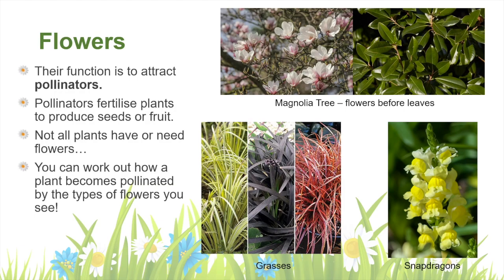Here we have two interesting examples. The magnolia tree produces its flowers before the leaves to make sure that the flowers are visible and can easily be accessed by pollinators. Once pollination is complete, that's when the leaves will grow. Another plant with flowers is the snapdragon — its flowers attract pollinators, but this plant is picky: it only wants certain creatures to pollinate it. When a creature of the correct size lands on the flower, it will cause the flower to open for the pollinator to access the nectar inside and get pollen as an extra present.